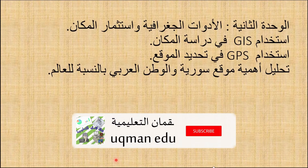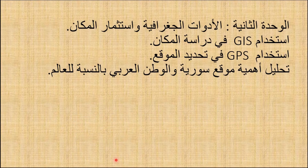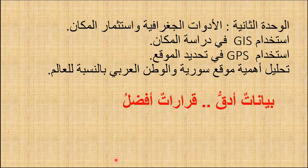الوحدة الثانية: الأدوات الجغرافية واستثمار المكان. سنحاول في هذه الوحدة بيان استخدام الـ GIS في دراسة المكان، واستخدام الـ GPS في تحديد الموقع، وتحليل أهمية موقع سوريا والوطن العربي بالنسبة للعالم. بيانات أدق تعني قرارات أفضل: كلما كانت البيانات المُدخلة إلى الحاسب في نظام المعلومات الجغرافي دقيقة، كلما استطعنا اتخاذ قرارات صحيحة أكثر.